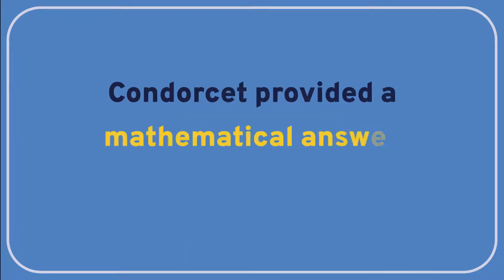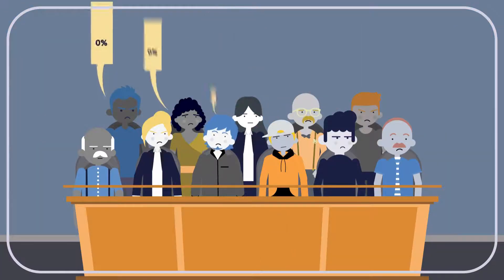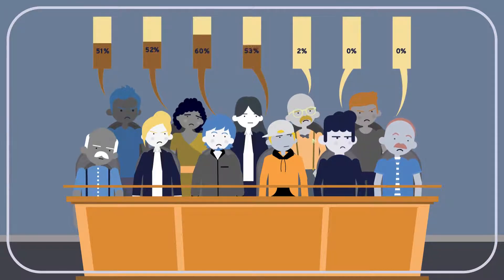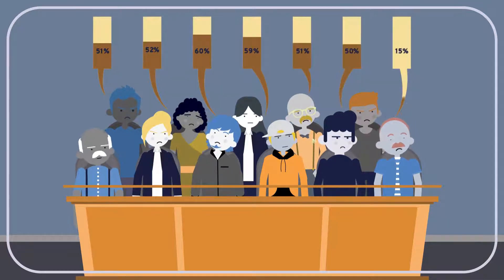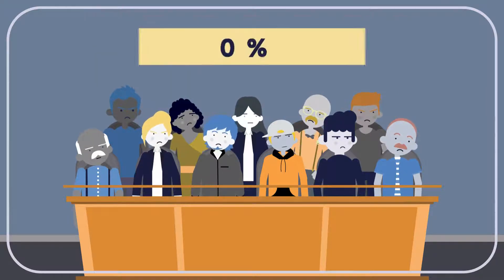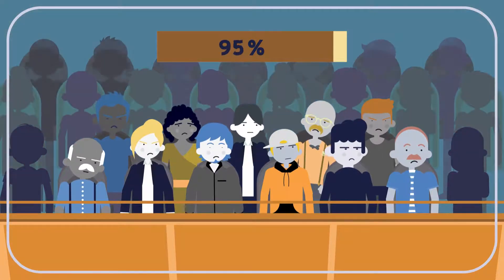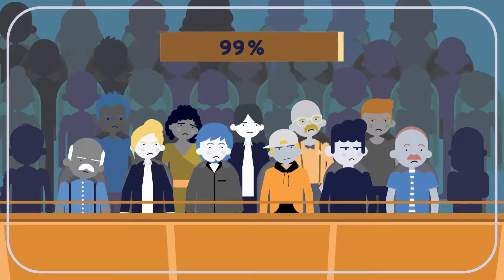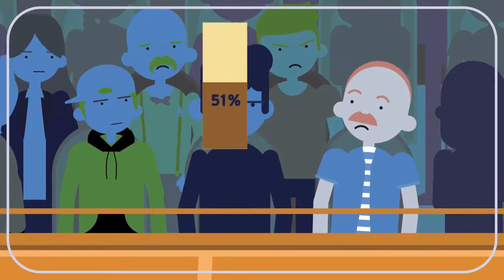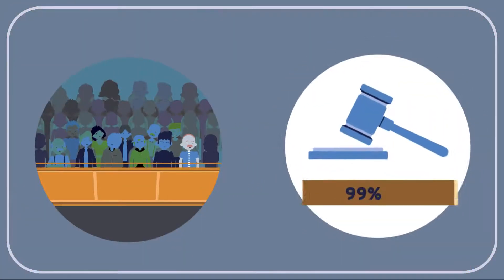Condorcet provided a mathematical answer to this question. He showed that as long as each member of the jury is more than 50% likely to be right, the jury's collective decision is more likely to be correct than the average juror is. He also showed that the more individuals you add to the jury, the more likely it is to make a correct decision. All you need is for each added juror to be slightly more than 50% likely to get the answer right, and the bigger the jury, the more reliable it will be.